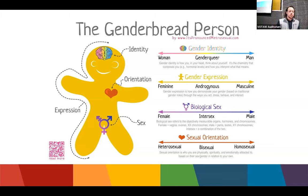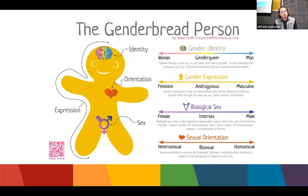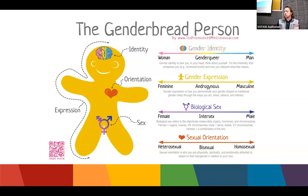Gender expression is how we dress, the clothes we pick, how we wear our hair, whether we wear makeup — it's how we express our gender. Some people dress more feminine, some more masculine, and some can switch hour to hour. Biological sex is more of a binary than the spectrum allows, as we usually have XX or XY chromosomes, though intersex development places some people in between. Sexual orientation is who we're physically attracted to — heterosexual, homosexual, bisexual — but this can fluctuate, and everyone doesn't have to pick just one of three.